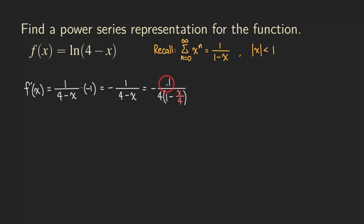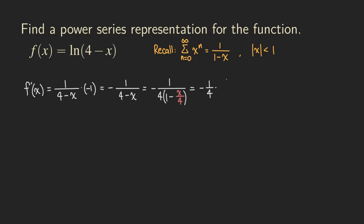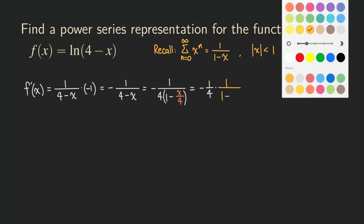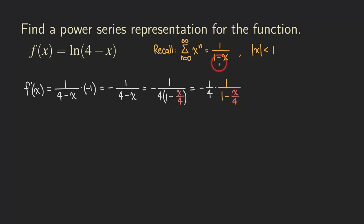We can keep all that outside the function as negative one over four. So now we can write f prime as negative one over four times one over one minus x over four. This part is now in the form of the geometric power series.